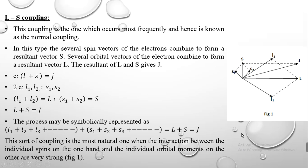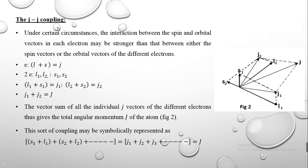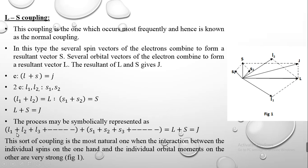Another type of coupling occurring in atoms is JJ coupling. Under certain circumstances, the interaction between the spin and orbital vectors within each individual electron may be stronger than that between the spin vectors or orbital vectors of different electrons. So whereas in LS coupling all orbital vectors combine to give resultant L and all spin vectors combine to give resultant S, in JJ coupling the individual electron interactions must be considered — the interaction among the individual components will be stronger.